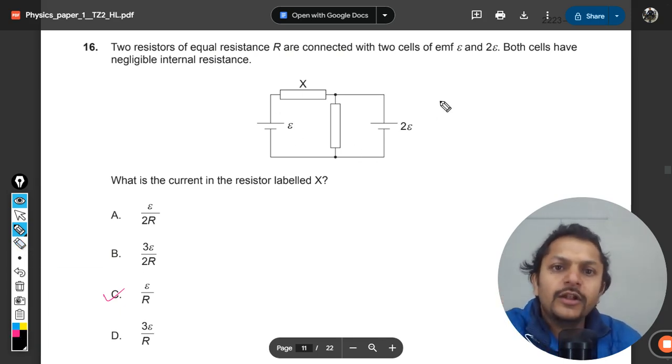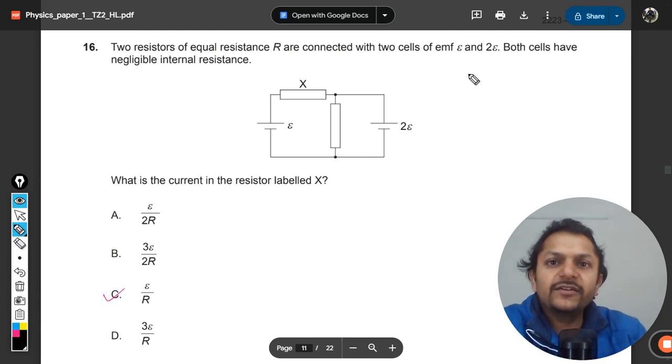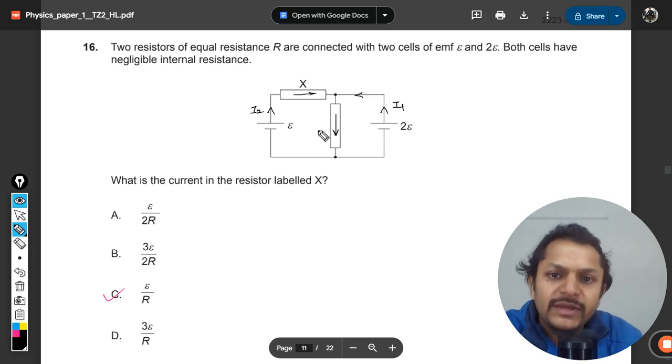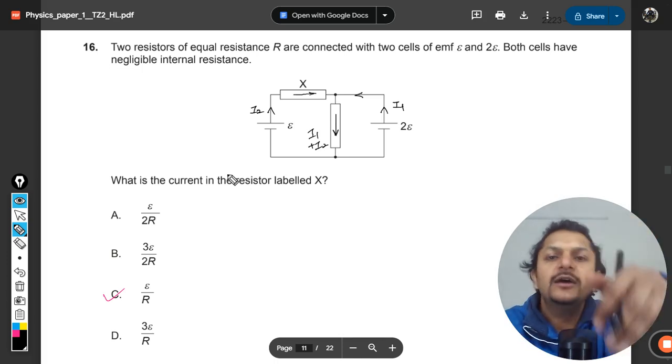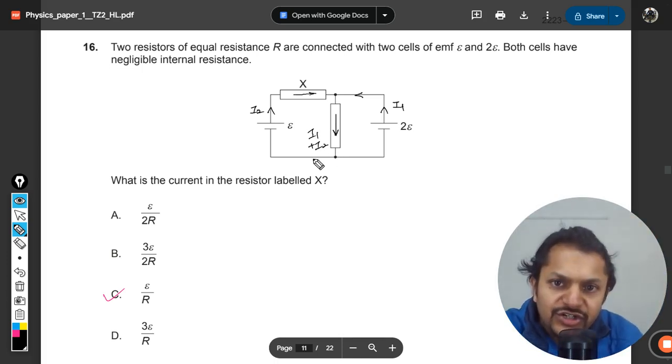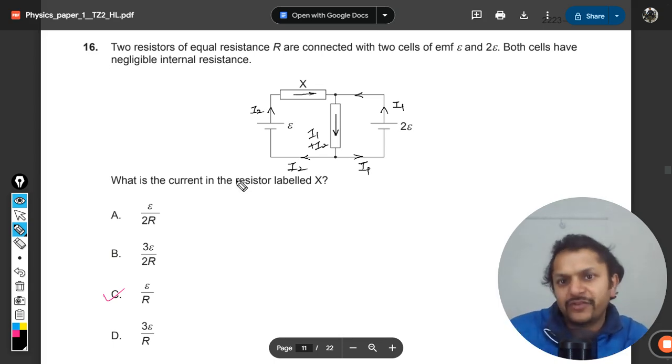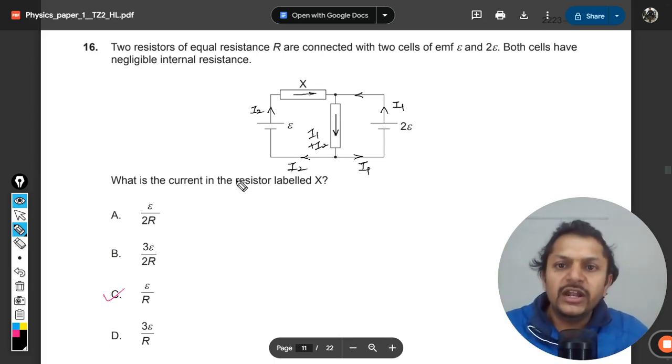Now we know the answer is c. In Kirchhoff's law, step one is we distribute the current in the circuit. Let me call this i1 and this i2. i2 current goes like this, i1 goes like this. At this junction both currents are added, so from this resistance the sum total of i1 plus i2 current is passing through it in the downward direction. At this junction both currents are separated and return to the respective batteries.